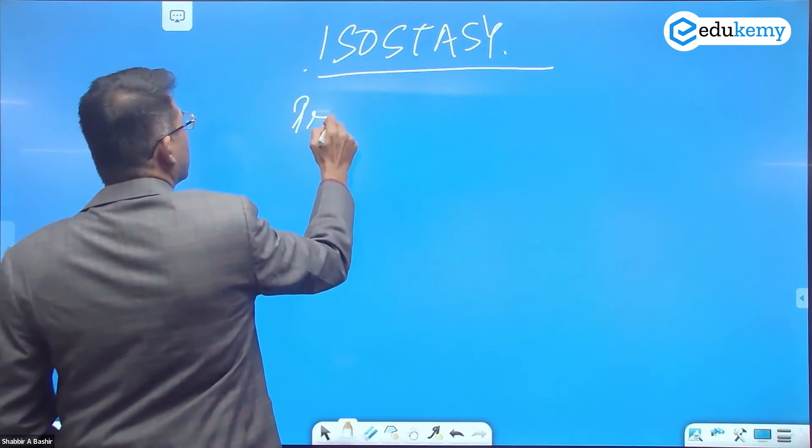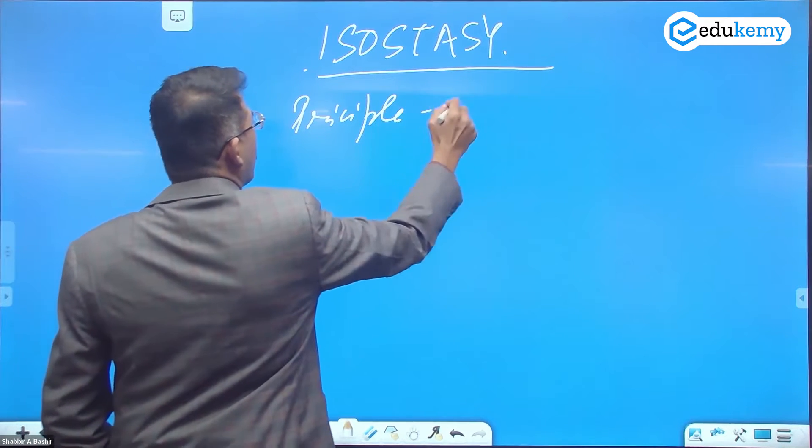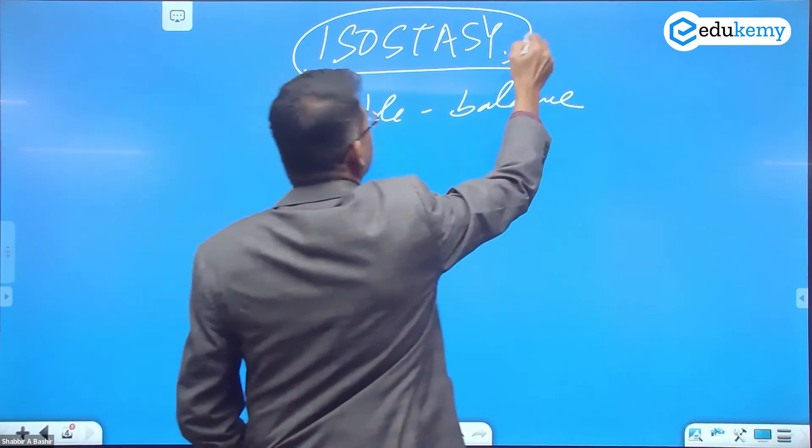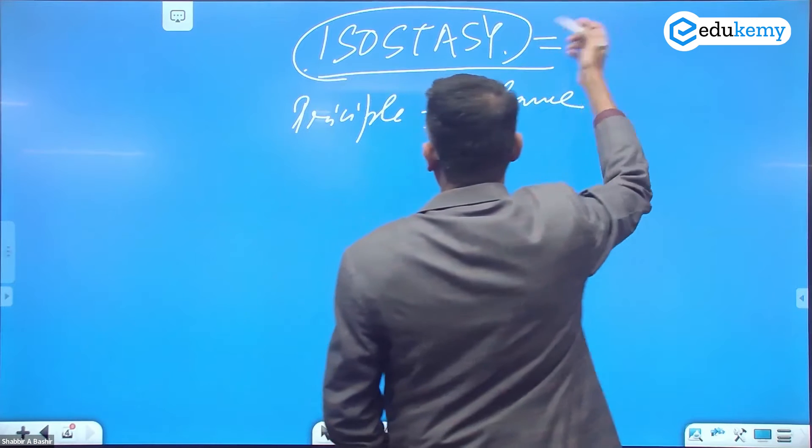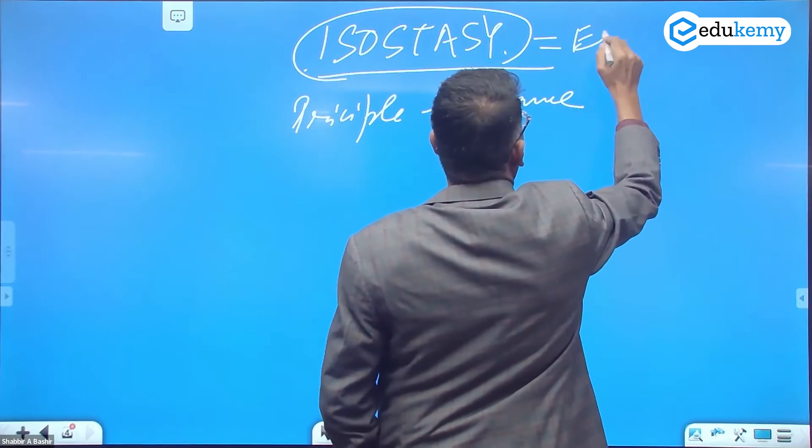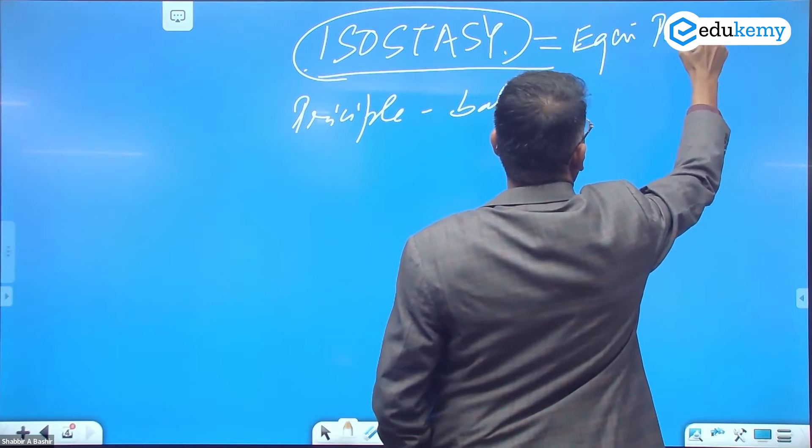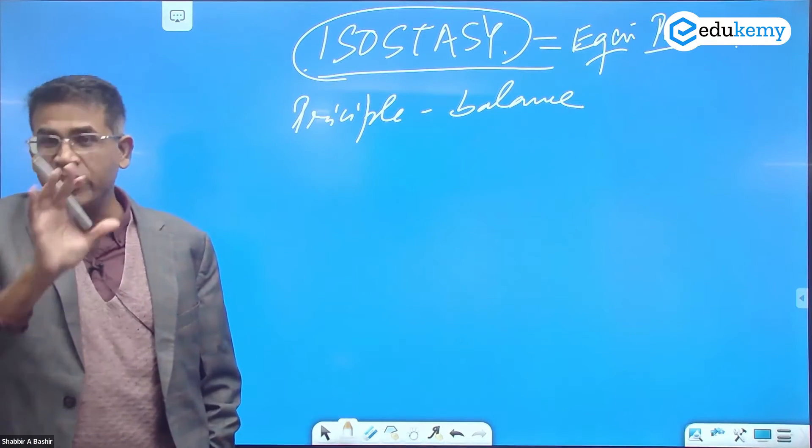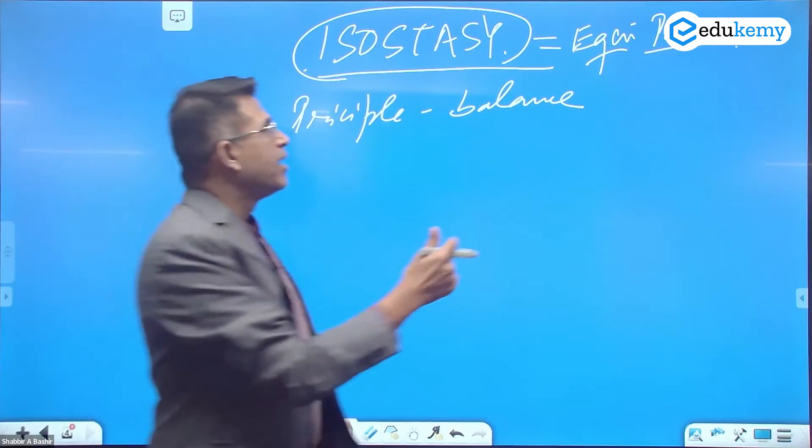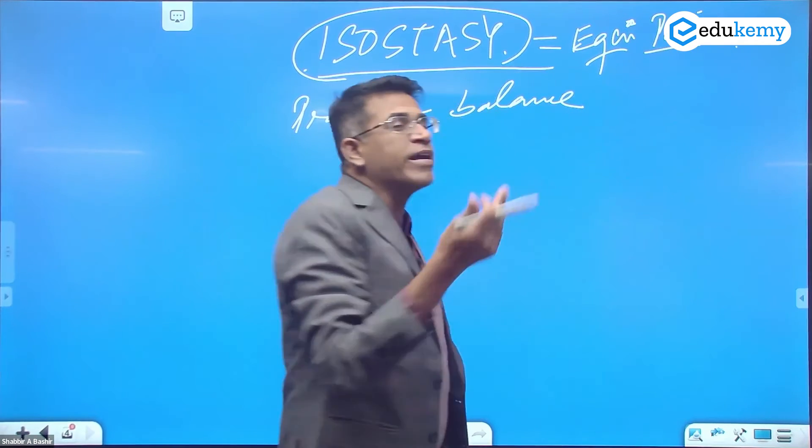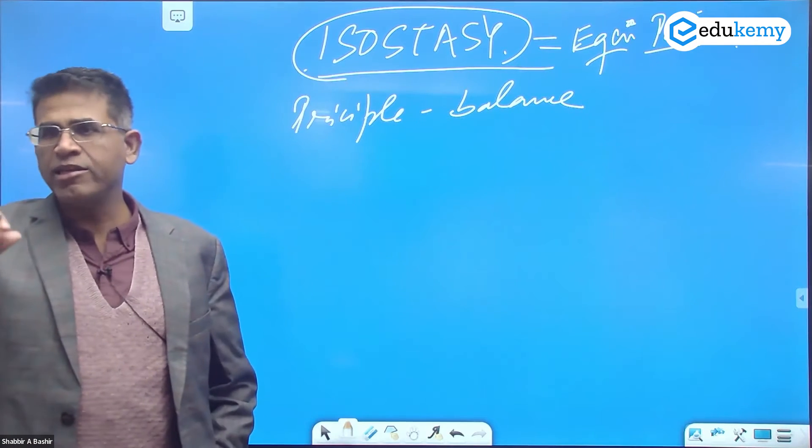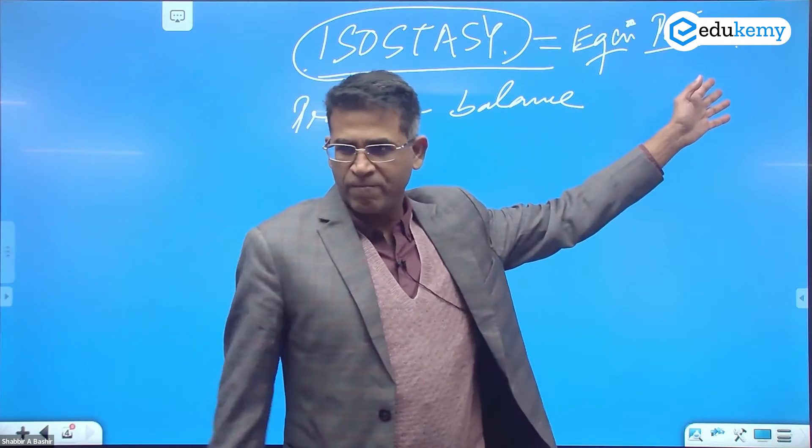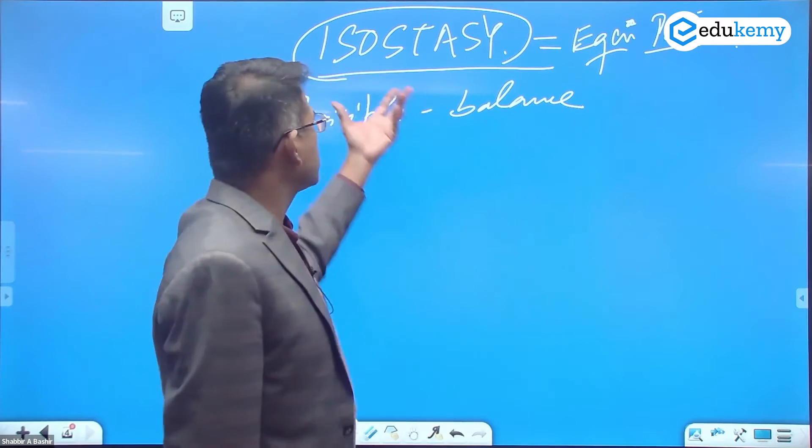Isostasy is the principle of balance. Isostasy is a short form of the word equipoise. Equipoise means stable standing, so in equilibrium balance, how are the landforms equipoised? In equilibrium balance, how do they stand? Poise means standing. So isostasy comes from the word equipoise.